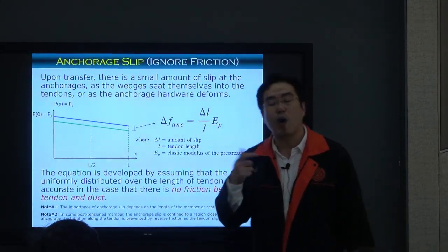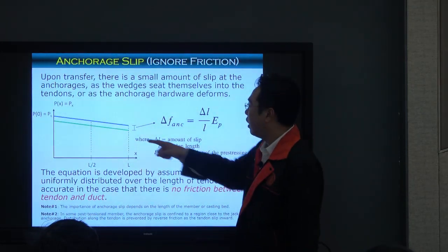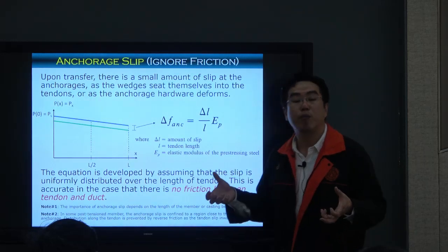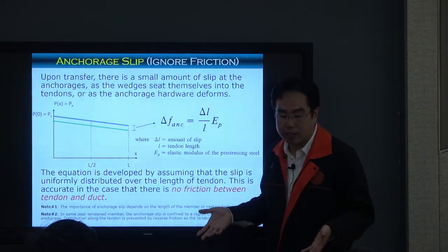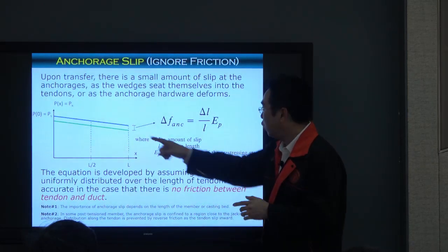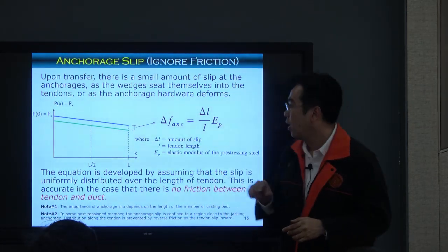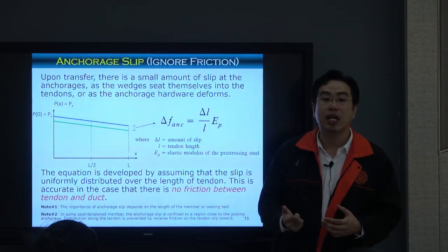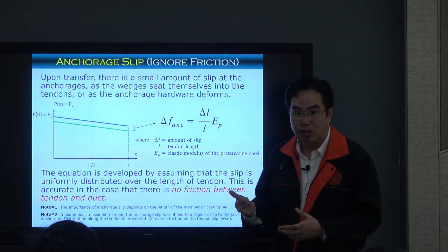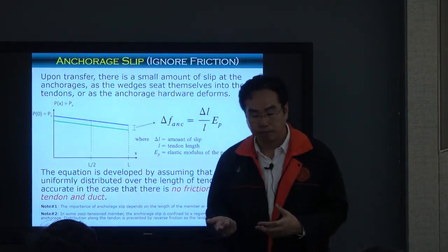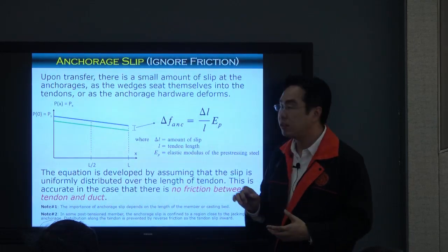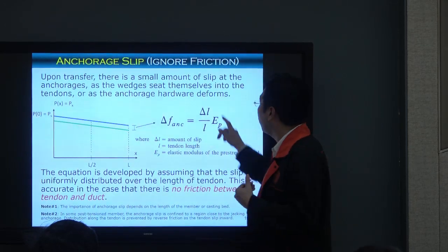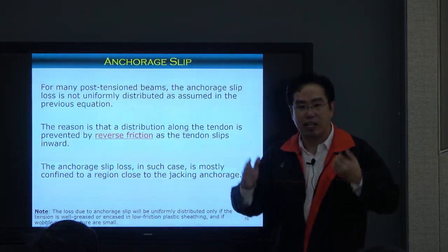This method is fast but not entirely realistic because in reality the displacement will not be uniform — you have friction. When you pull the tendon, friction acts opposite to the checking force. After release, the tendon tries to move back, and friction changes direction. This phenomenon is called reverse friction. If we consider the magnitude of force as not changing at that moment, the direction of friction reverses. The curve during pulling has a slope, and after release, the reverse friction creates the same slope in the opposite direction.